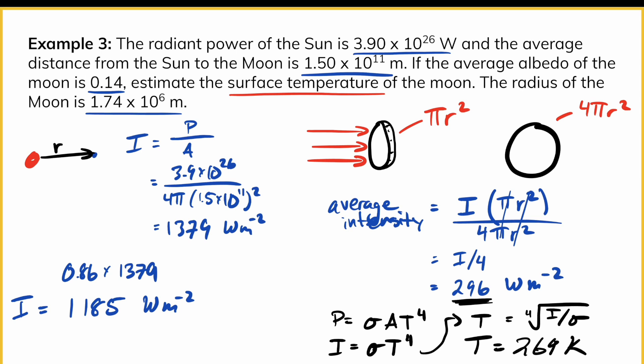That's how we use albedo in calculating temperatures, energy, and intensity in the Sun-Earth system.